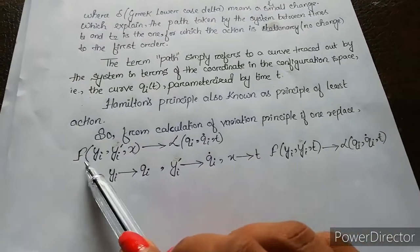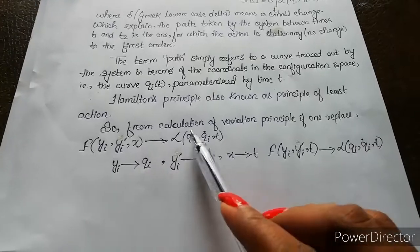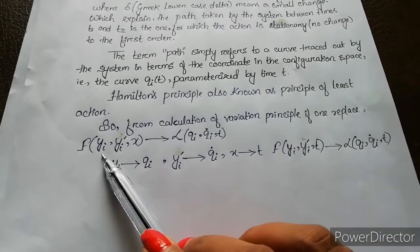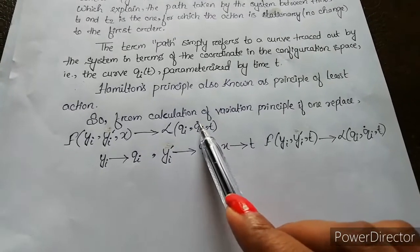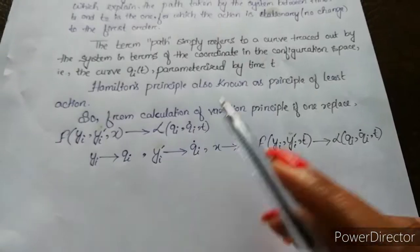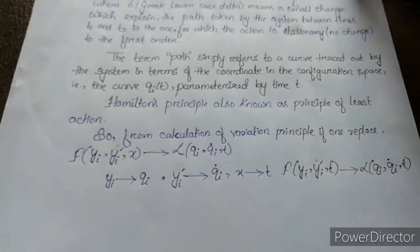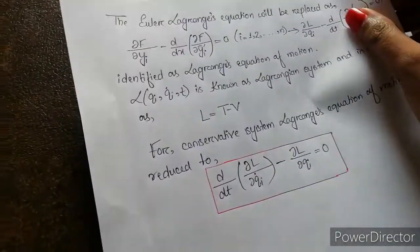If we replace this particular term with the Lagrangian, yi is replaced by qi, yi prime is replaced by qi dot, and x is replaced by t, then we can write the Euler-Lagrange equation.